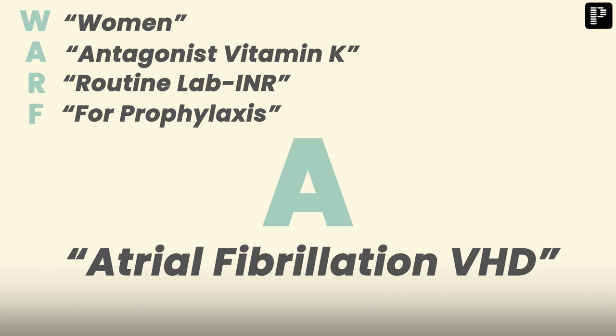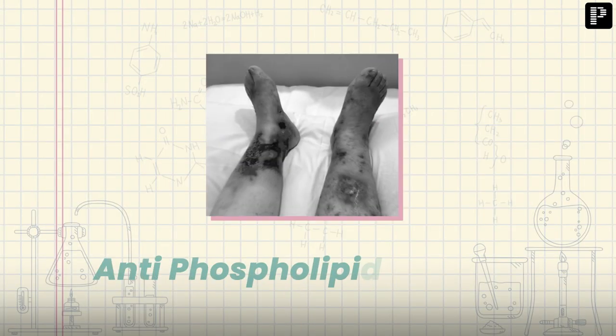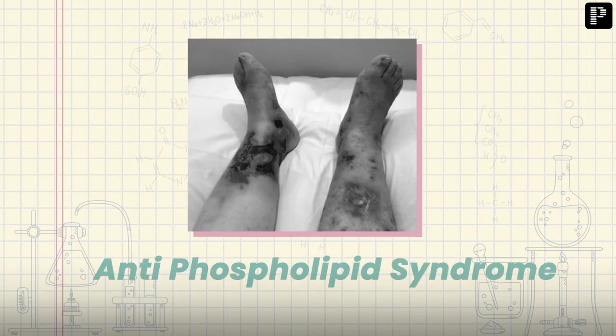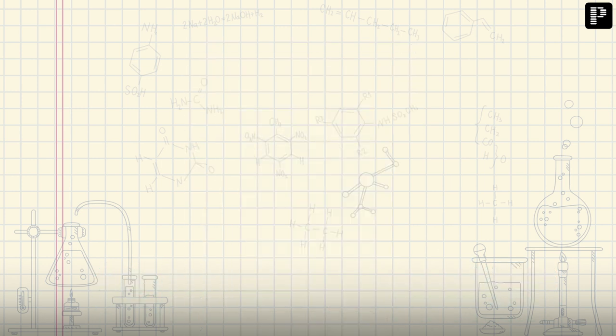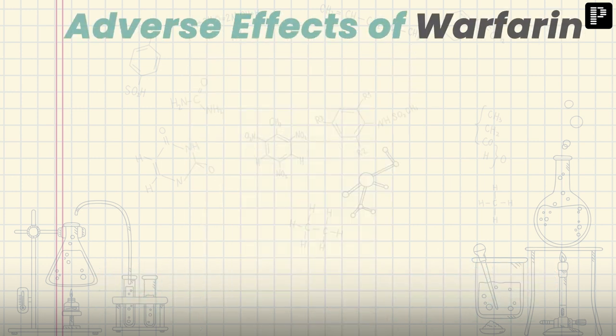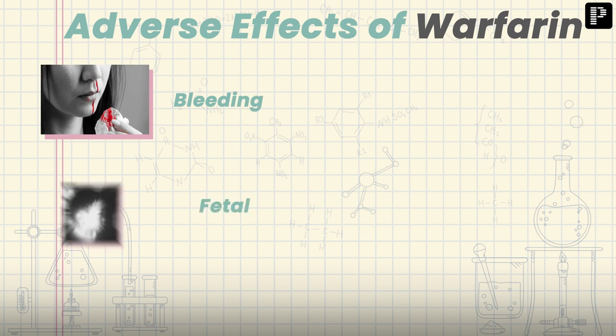The next A stands for Atrial fibrillation. The drug is used for atrial fibrillation in valvular heart disease. Whenever there is atrial fibrillation, there is a chance of clot formation, which may embolize to the brain causing stroke — so we use warfarin there. It is also used in antiphospholipid syndrome.